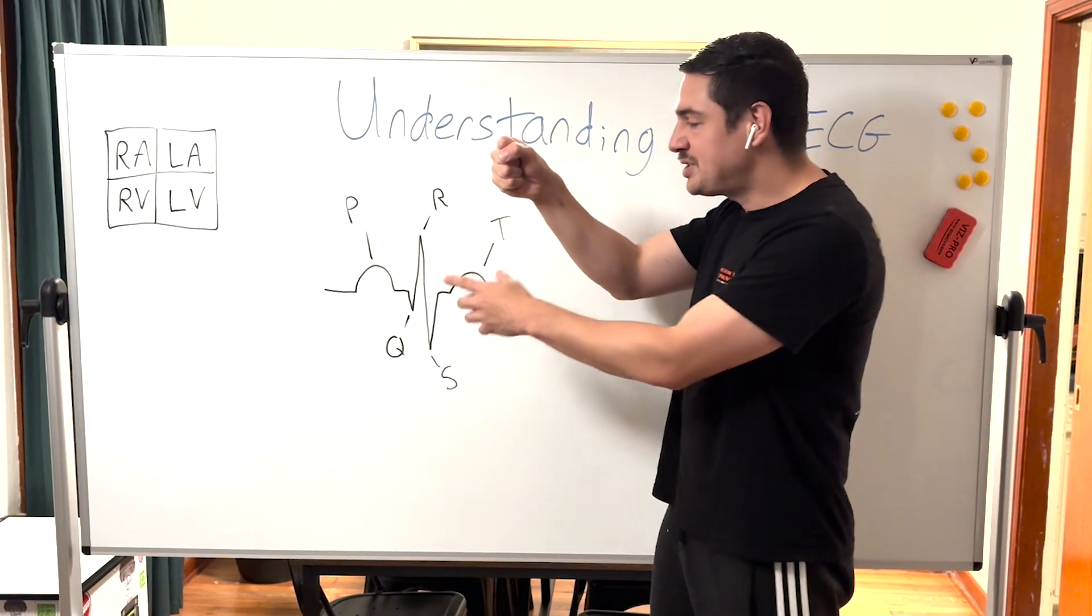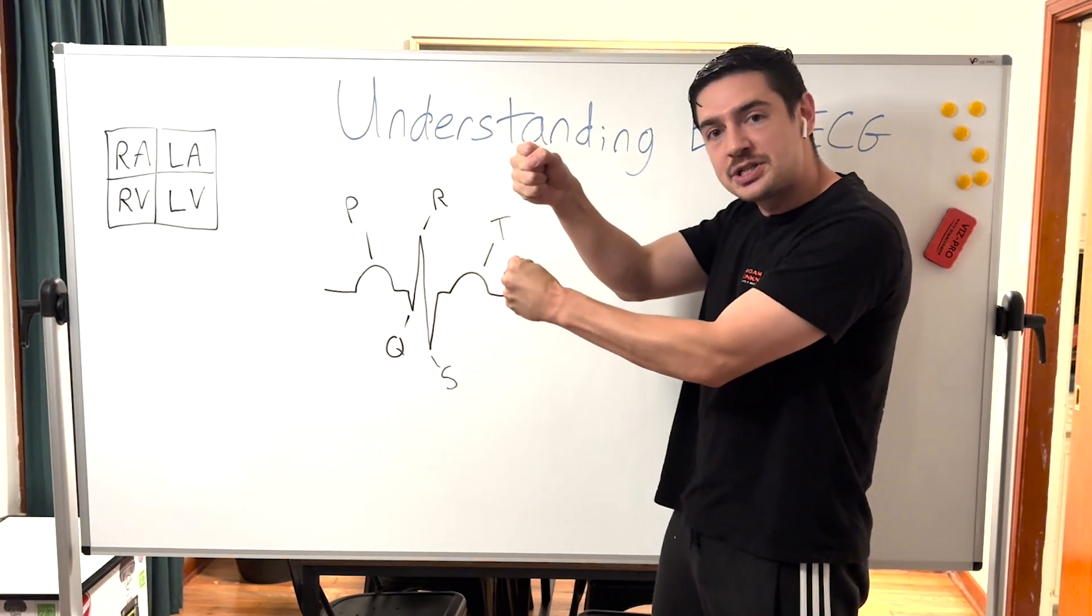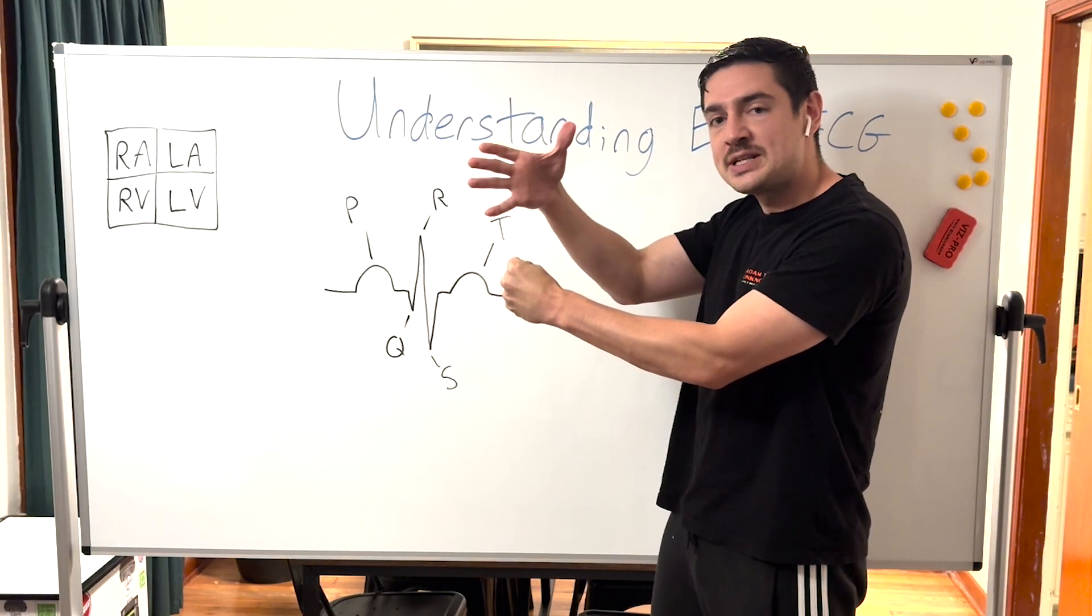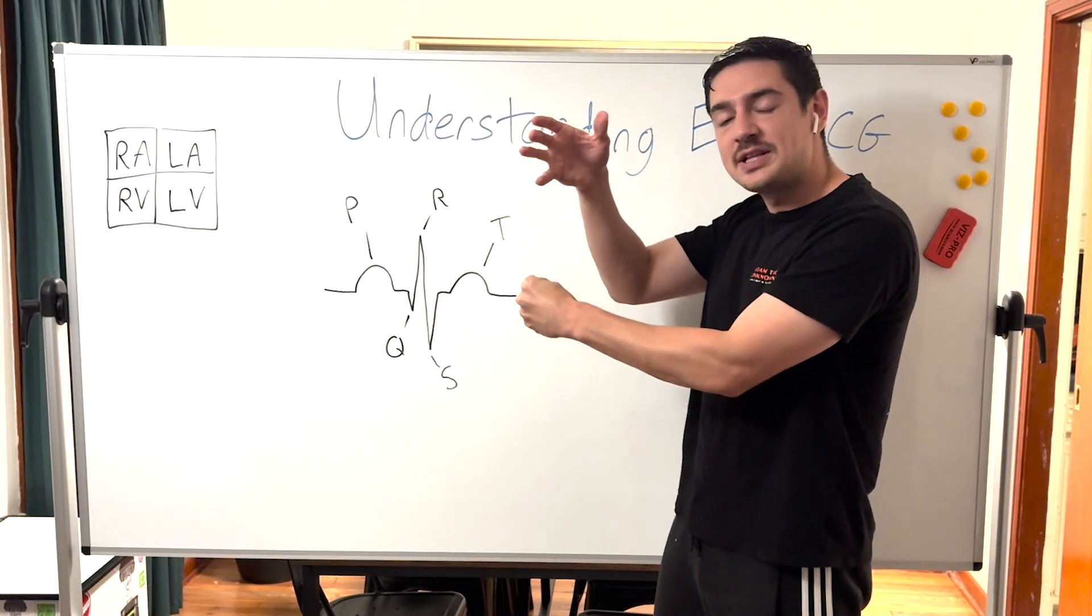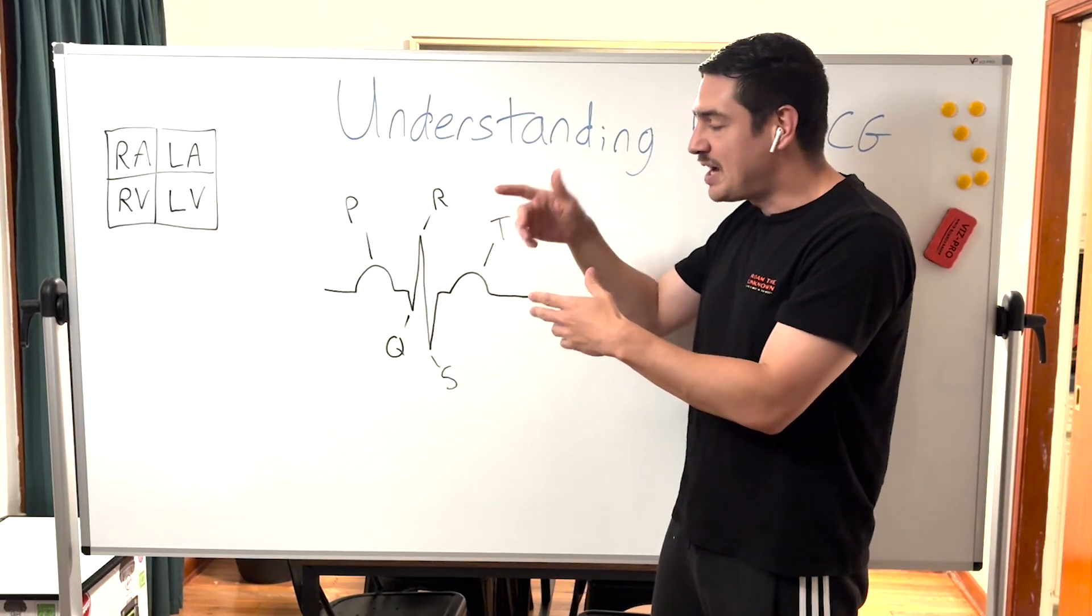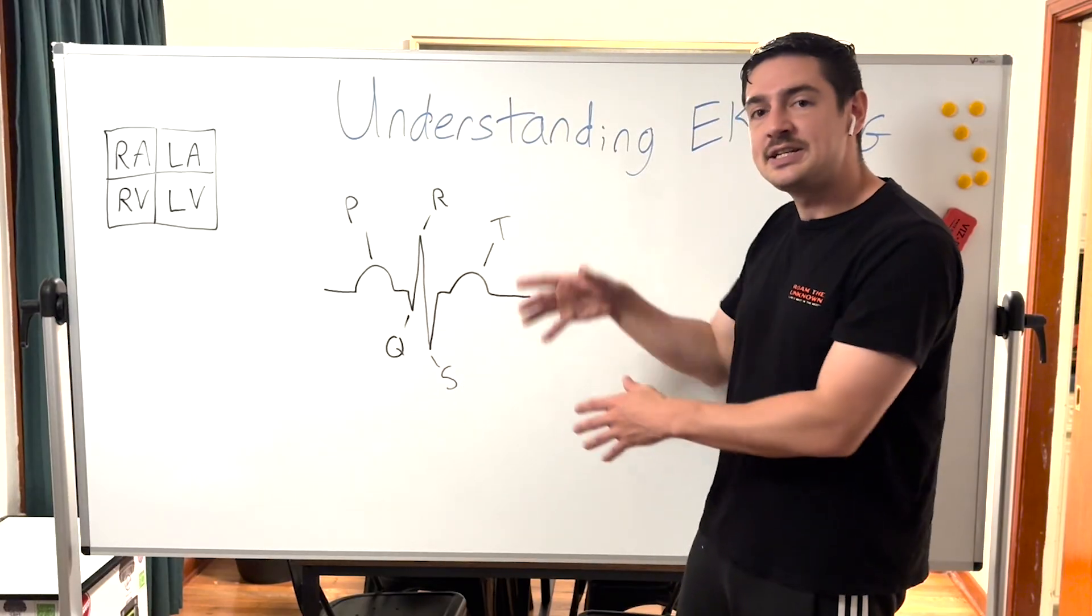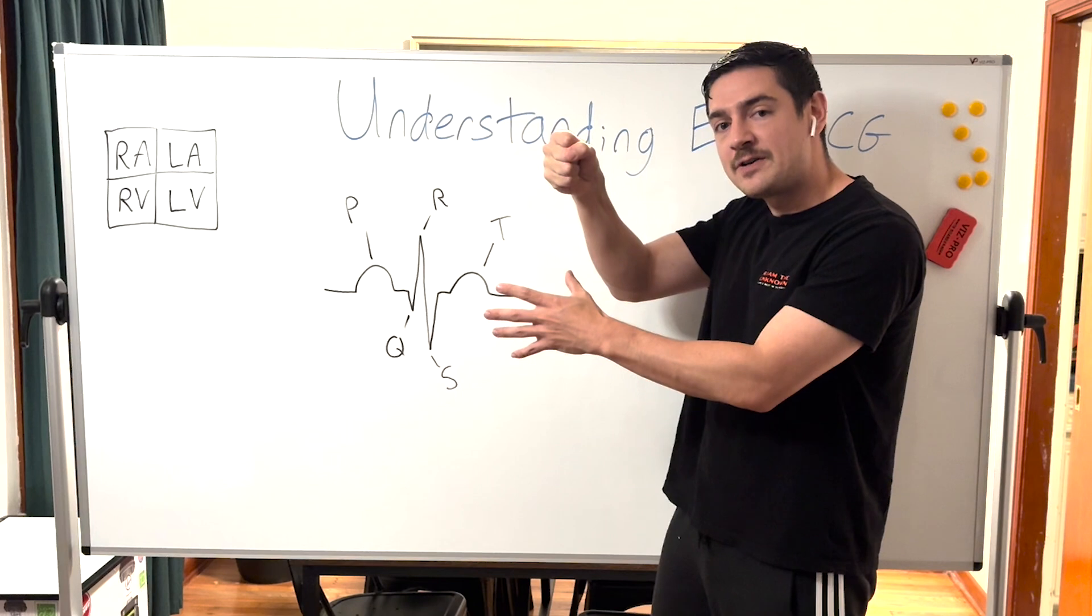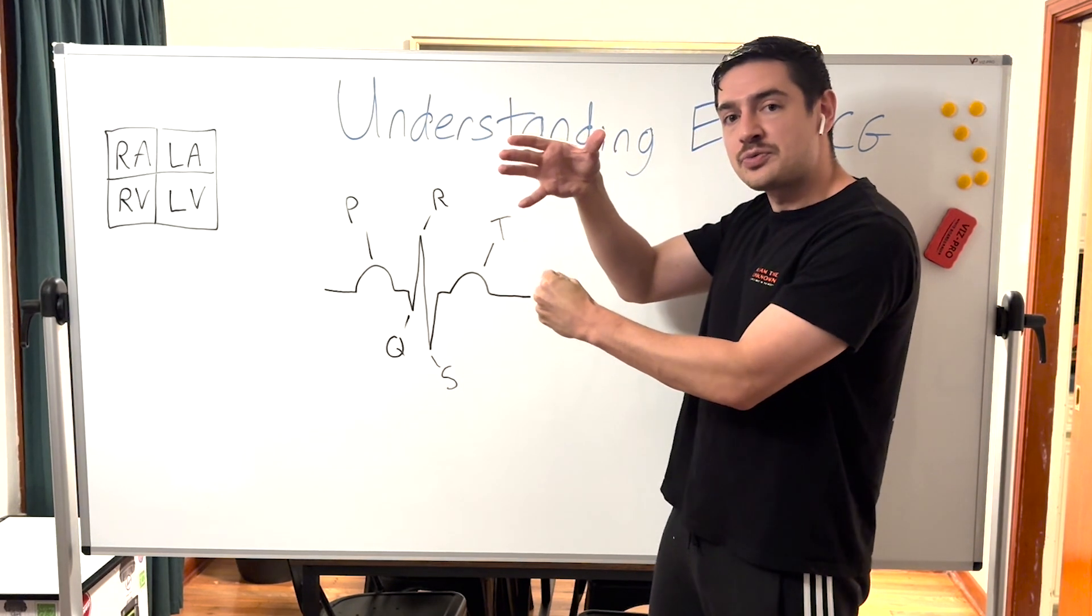As the atrium squeezes, we move towards our QRS complex and our ventricle is going to squeeze. The same time that our ventricle squeezes, the atrium is going to release to refill up with blood. Then we move to our T wave. That's whenever the ventricles will expand and start to refill up on blood, then the cycle will continue.